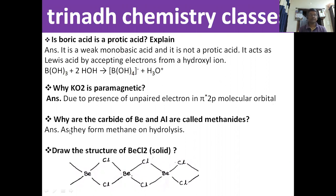The next question: why are the carbides of beryllium and aluminium called methanides? Due to hydrolysis, the carbides of beryllium and aluminium produce methane. That is why these are called methanides.